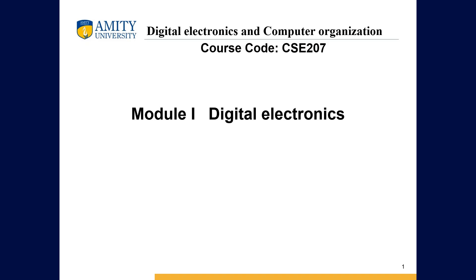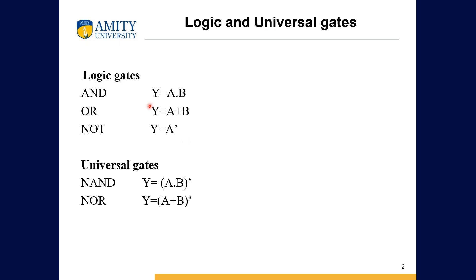In this series we will be starting Module 1 of Digital Electronics and Computer Organization. The main focus is on the digital electronics part — we'll be discussing logic gates and different types of logic circuits and how they work. The basic logic gates are AND gate, OR gate, and NOR gate. Universal gates are NAND and NOR. We'll be going through these quickly because these are basics and prerequisites.